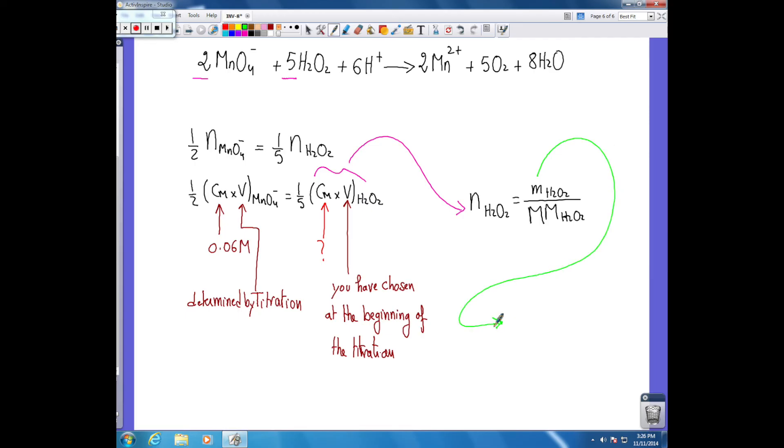Once I have the mass of H2O2, I can determine the mass percent of H2O2 solution. It's equal to mass of H2O2 divided by the mass of the solution times 100%. To determine the mass of the solution, I can use the volume of hydrogen peroxide that I have used. Since it's mainly water, I will consider that the density is equal to 1 gram per milliliter.